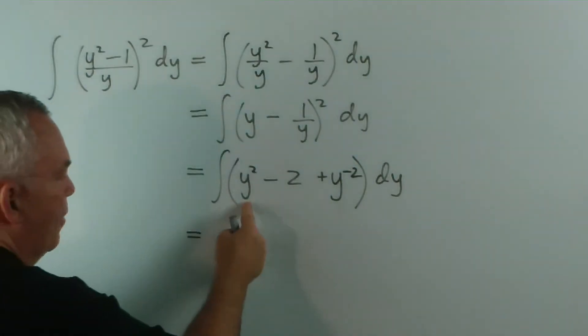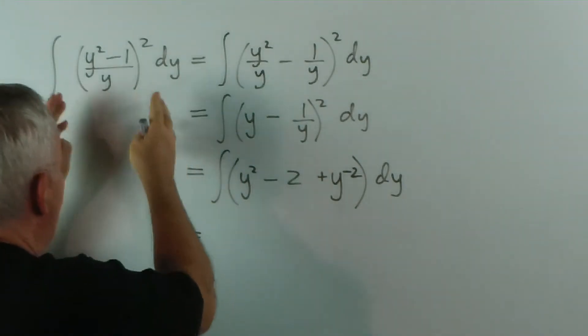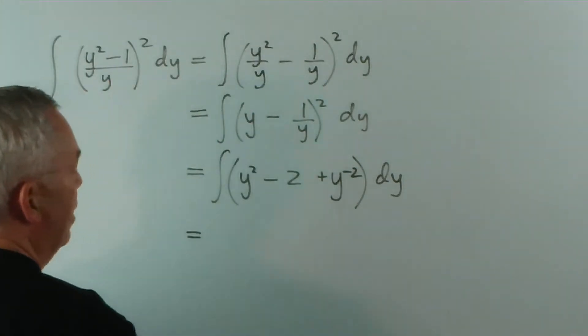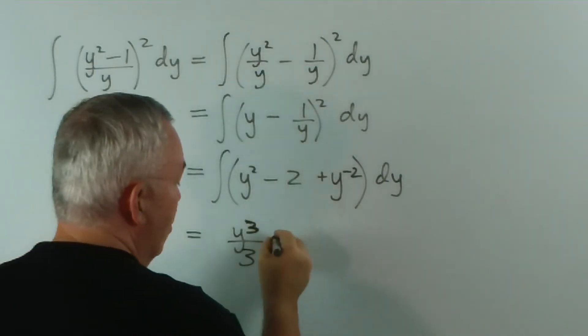Let's integrate. We have three separate terms now. That was the benefit we got from breaking everything up and expanding. And the three separate terms, integrating this gives us y cubed on 3. That's a quite straightforward integral. This is even more straightforward.